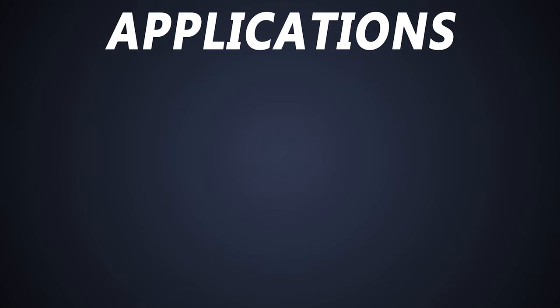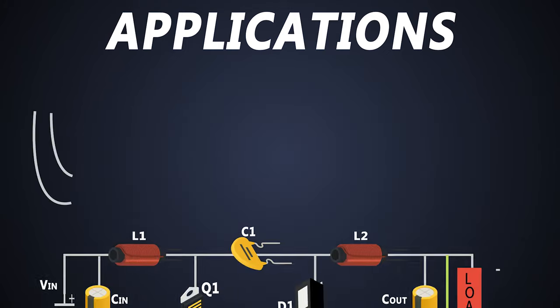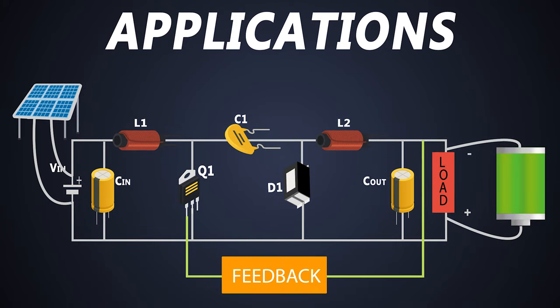This DC-to-DC converter circuit can be used as a power factor correction circuit. It can also be used in the maximum power point tracking of a solar panel, just like we use a buck-boost converter.